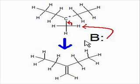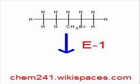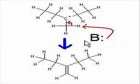So B here represents a base. In the E1 reaction, the base is not that important because this carbocation is so unstable that even a very weak base is going to be able to remove this proton. So the base here, it's usually just a solvent that we're using in this reaction.